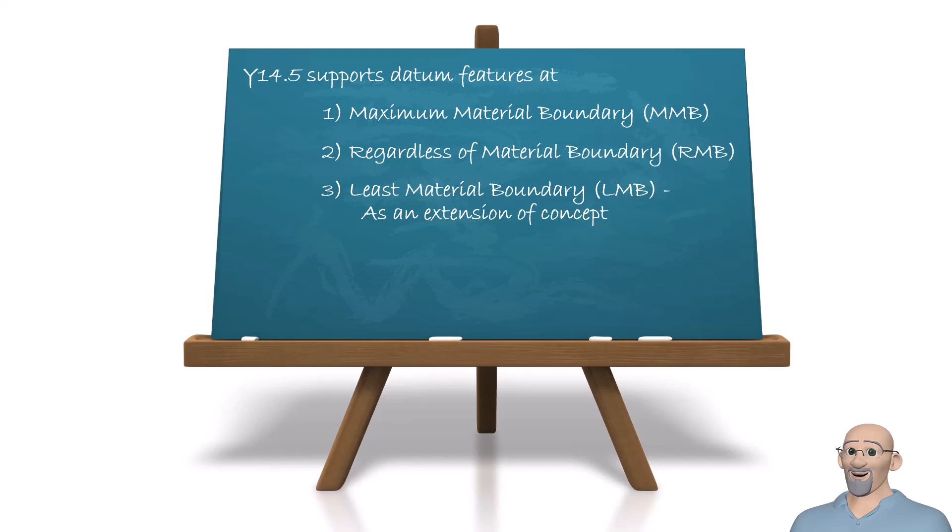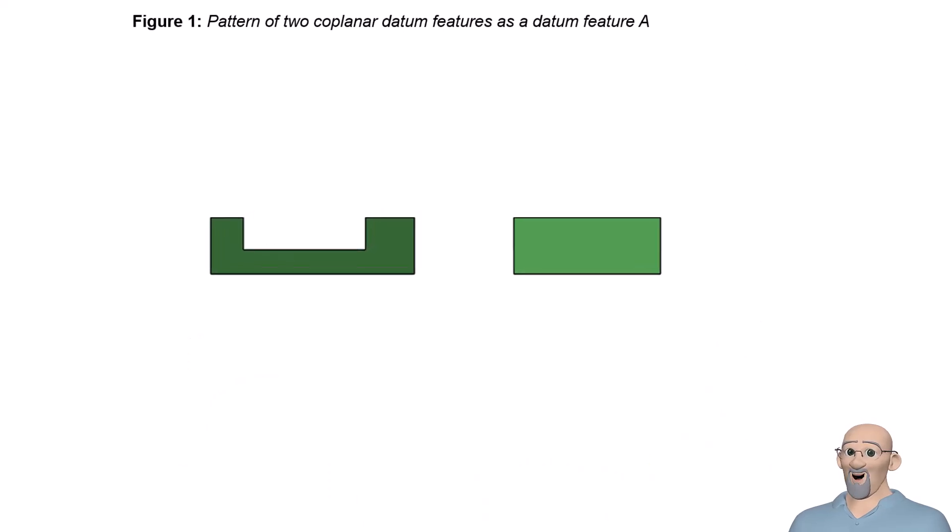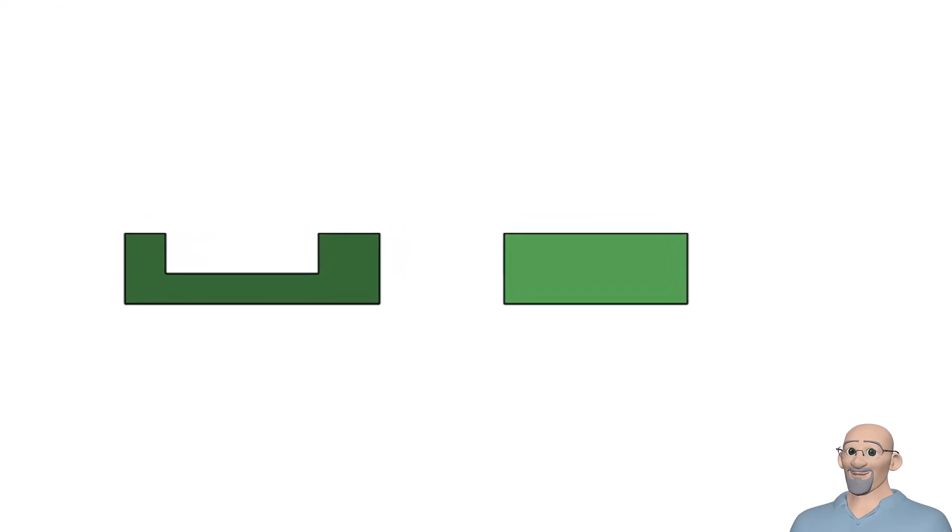Let's start with a very simple example that is a pattern of two coplanar datum features as datum feature A. Here we have a part where we are using a pattern of two coplanar surfaces as datum feature A. Our datum feature simulator will mate with both surfaces and establish a datum plane.